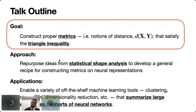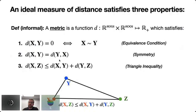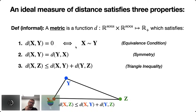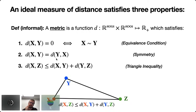We have measured hidden layer activations X and Y and want to construct a distance function d with three properties. First, the distance between X and Y is zero if and only if they are equivalent representations. Second, the distance is symmetric: d(X,Y) equals d(Y,X). Third — and trickiest — the triangle inequality: for any three networks X, Y, Z, the distance from X to Z is less than or equal to d(X,Y) plus d(Y,Z). Distance functions satisfying all three are called metrics.